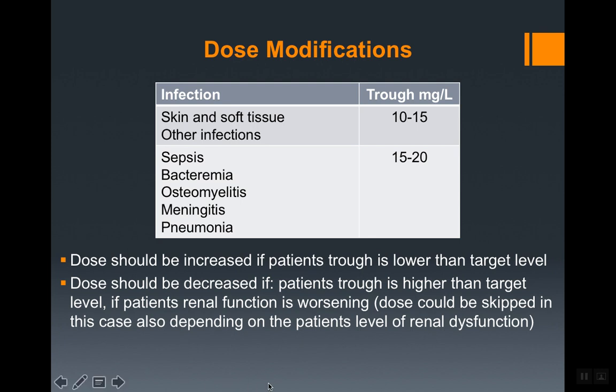Dose modifications are based on the trough level. Target trough levels for skin and soft tissue or other infections are 10 to 15, while sepsis, bacteremia, osteomyelitis, and endocarditis targets are 15 to 20. The dose should be increased if the trough is below target, and decreased if the trough is above target or if renal function is worsening — the dose can even be skipped if renal function is unstable.